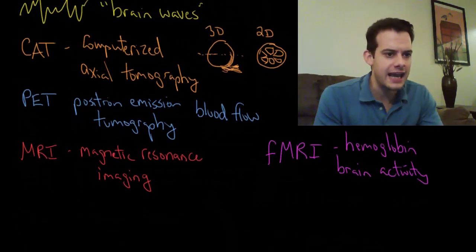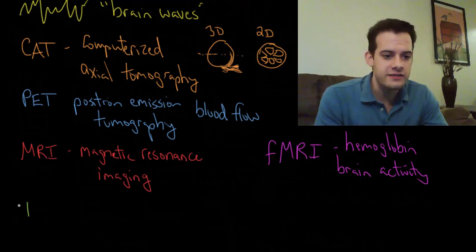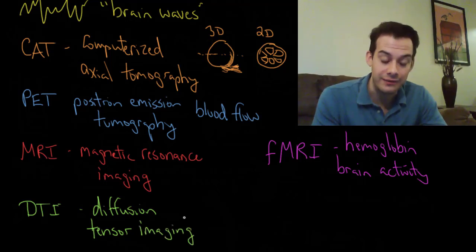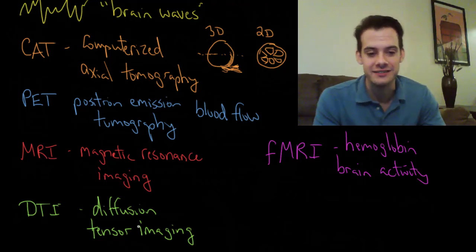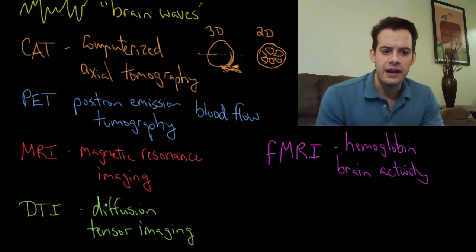And I'll end with one last scanning technique and this is one that you might not see in your textbook. This is a newer technique and this is DTI and this stands for diffusion tensor imaging. And so what diffusion tensor imaging does is it looks at the diffusion of water in the brain, and the idea is that water is going to be distributed throughout the brain but it's going to diffuse differently in different areas.